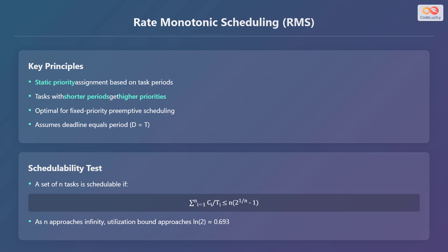A set of N tasks is schedulable if the sum from i equals 1 to N of C_i divided by T_i is less than or equal to N multiplied by (2^(1/N) − 1). As N approaches infinity, the utilization bound approaches the natural log of 2, which is approximately 0.693.